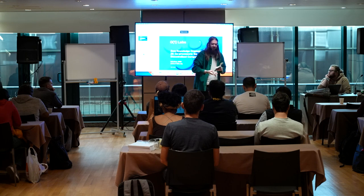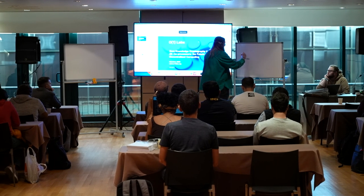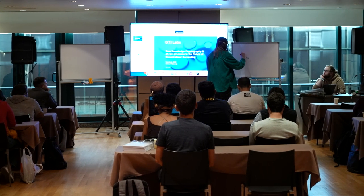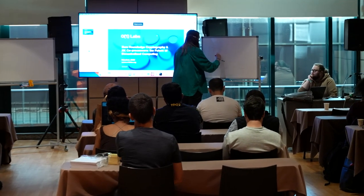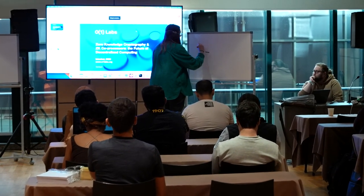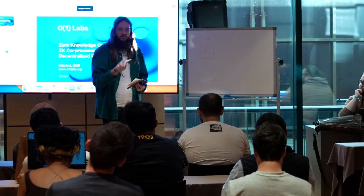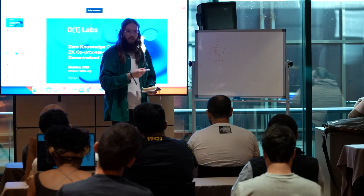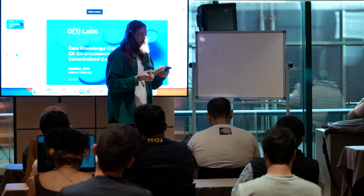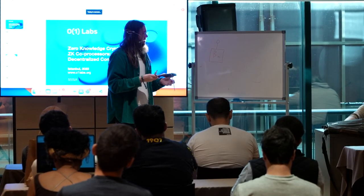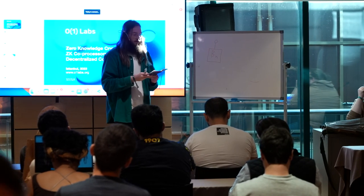The way Mina works is that for every single block on the chain, there is also a proof paired to that block which is attesting to the validity of that block as well as every prior block and every transaction included in every prior block. In this sense, it's sort of like a constant rollup that's happening on chain.